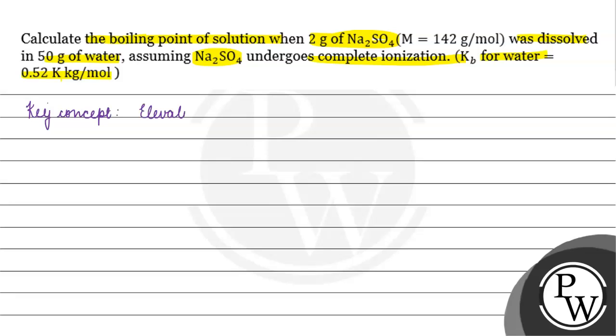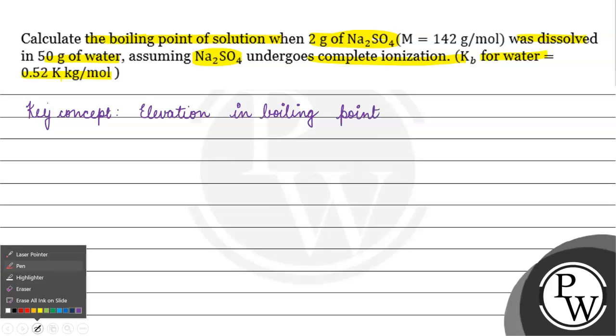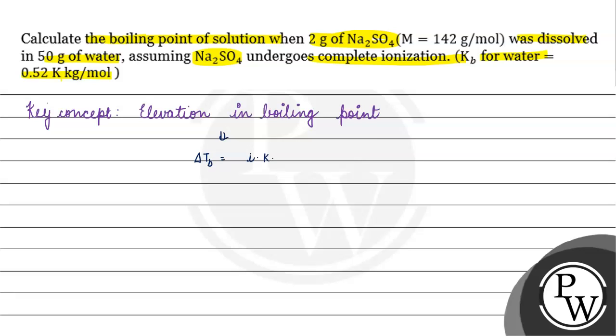Elevation in boiling point, which means basically ΔTb is equal to i into Kb into molality. Kb into molality. ΔTb is equal to, which is boiling point of solution minus Tb0, is equal to i into Kb into molality.